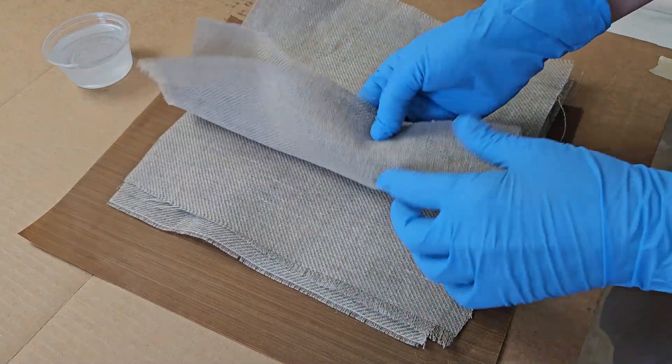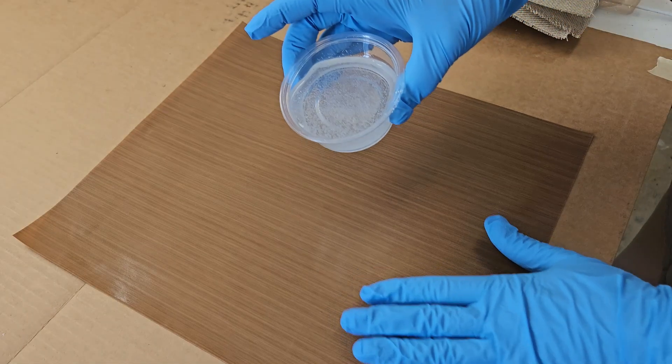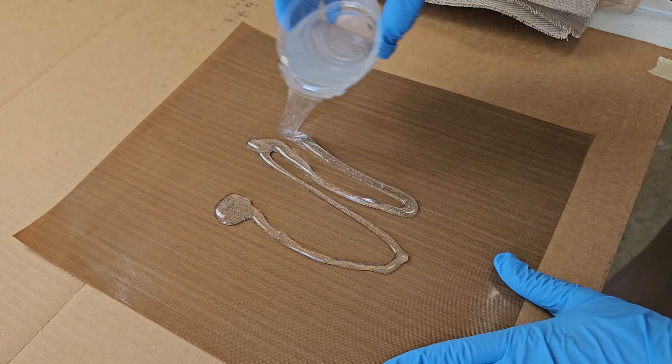I'm gonna try laying up a panel using this flax fabric. Got some resin mixed up. This is the tabletop epoxy from Total Boat.